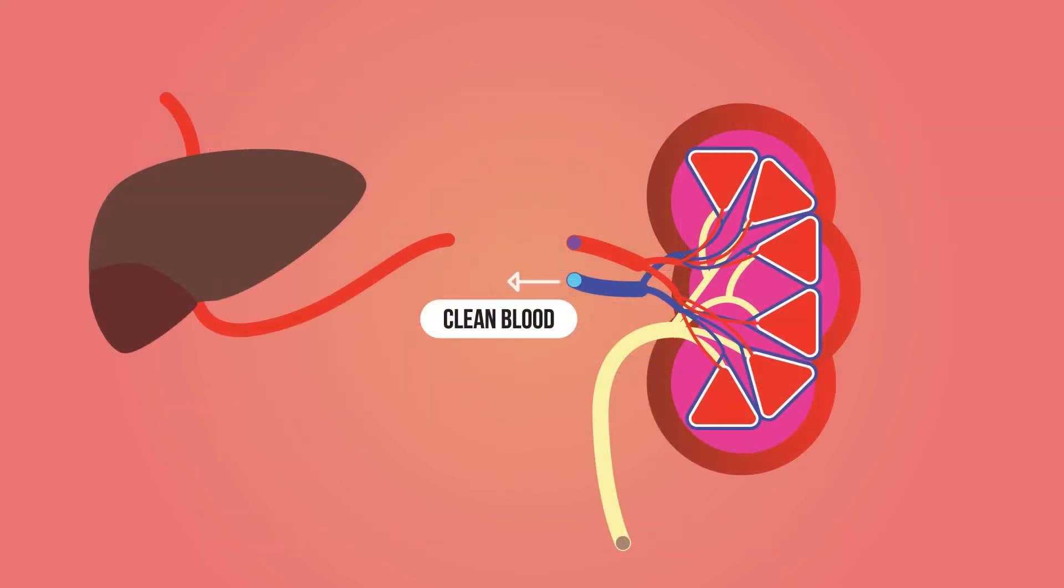Urea is produced in the liver when excess amino acids are broken down. The nitrogen from the amino acids is converted to ammonia. But this is poisonous and so we don't want it in our blood. Instead, it's converted again to urea before being released into the plasma.